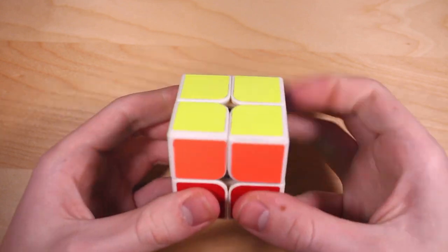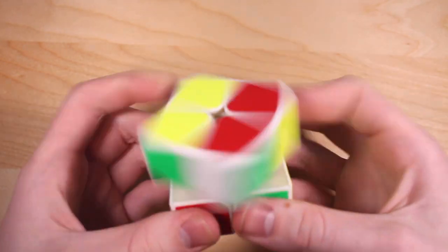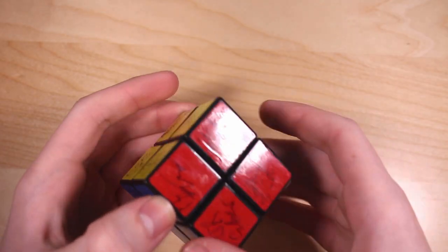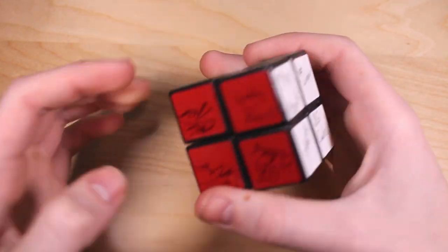MoFing Jiao Shi MF2 or MF2S. I'm not exactly sure. Turns pretty well, actually. Shengxiao 2x2, signed by a bunch of people at Nationals 2017.